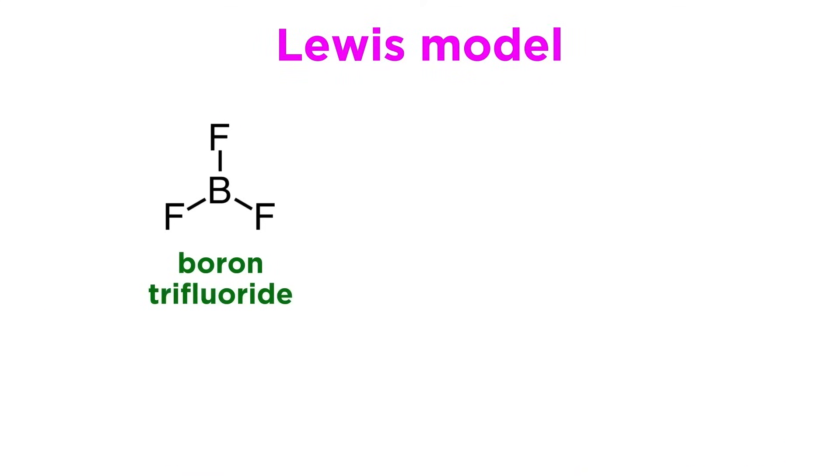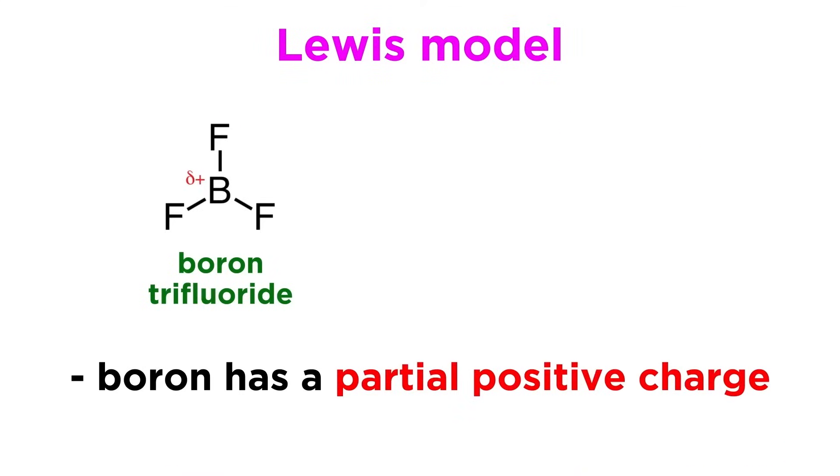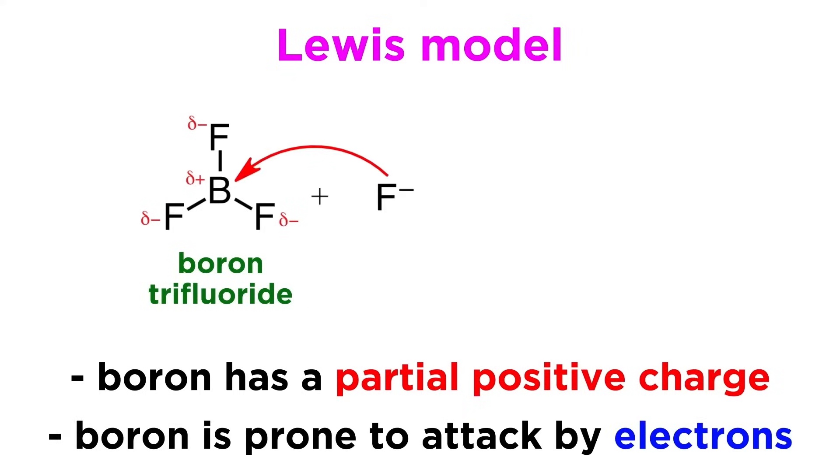For example, let's look at boron trifluoride, BF3. This boron atom has a substantial partial positive charge because of the polarity of these boron-fluorine bonds. Because of this electron deficiency, it is prone to attack by electrons.